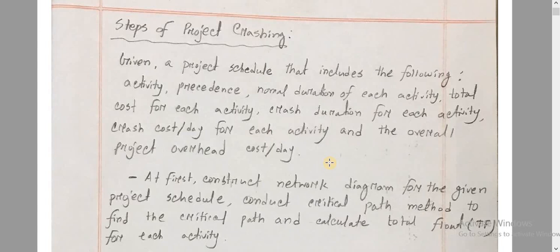The crash duration is the crash duration for each activity. It indicates the minimum number of days an activity can be reduced to when additional resources are applied.